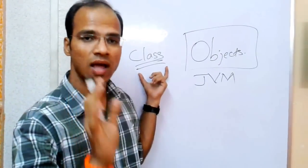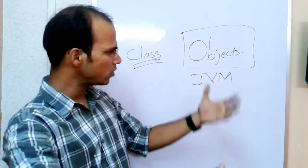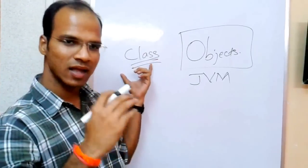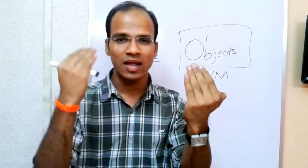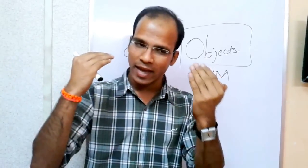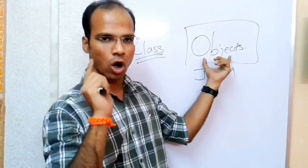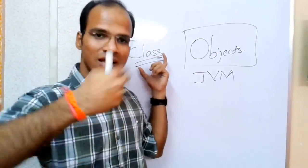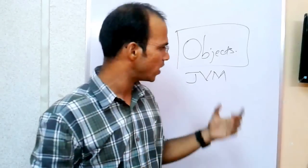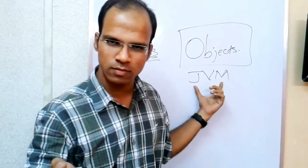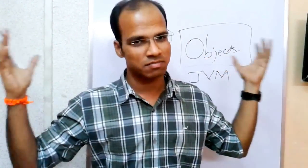So you require an object to work, but to create an object you require a design, and that design is the class. In some sense, objects are real instances and classes are imaginary parts — anything is created using imagination, and if you want to work with that imagination, you require an object. Objects have memory, and that memory is provided by JVM. So: class is imaginary, object is the real instance.